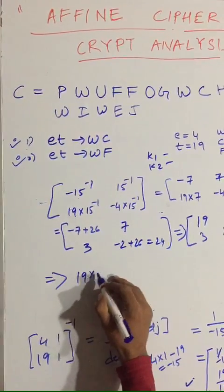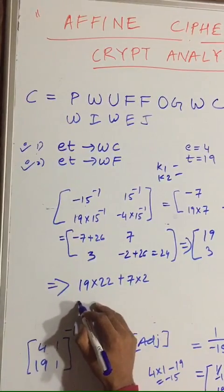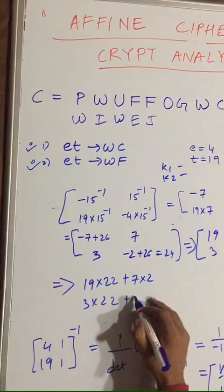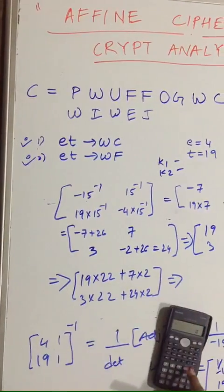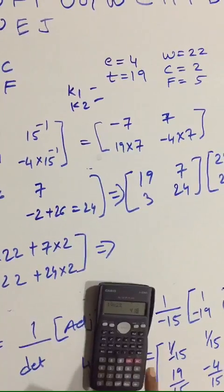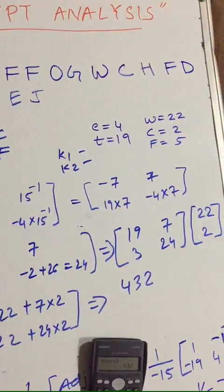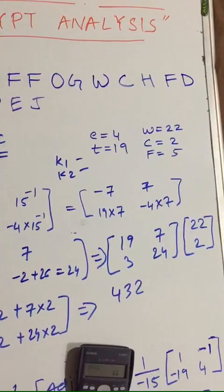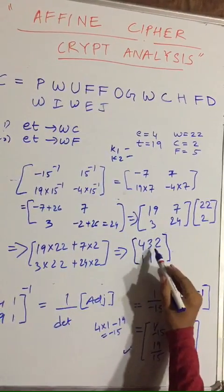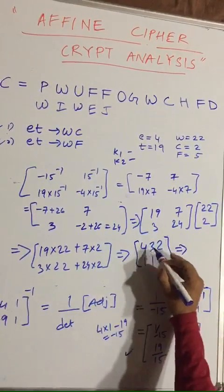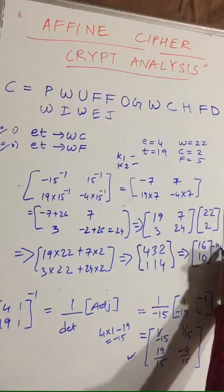The multiplication gives: 19·22 + 7·2 = 418 + 14 = 432 for k1, and 3·22 + 24·2 = 66 + 48 = 114 for k2. Taking mod 26: 432 mod 26 = 16 and 114 mod 26 = 10. So k1 = 16 and k2 = 10.